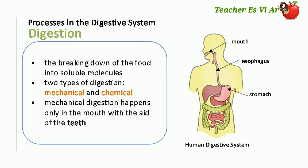Mechanical digestion happens only in the mouth with the aid of the teeth. The teeth chew, grind, and slice the food into smaller pieces.